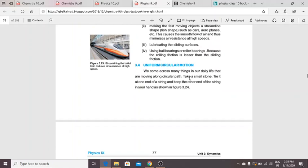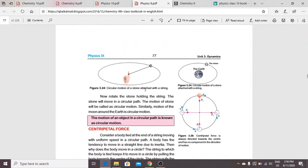Uniform circular motion: We come across many things in our daily lives that are moving along a circular path. Take a small stone, tie it at one end of a string, and keep the other end in your hand. Now rotate the stone holding the string. The stone will move in a circular path. The motion of an object in a circular path is known as circular motion.